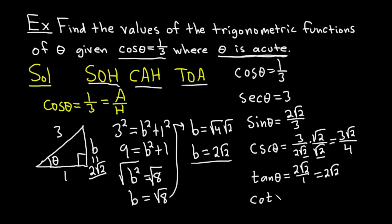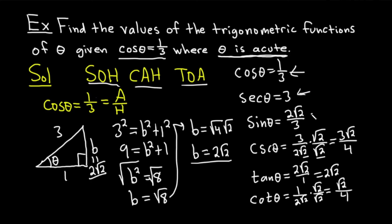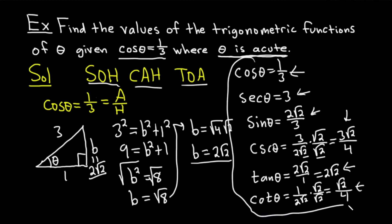And last but not least, cotangent of theta is the reciprocal of tangent: 1 over 2 root 2. Rationalizing gives root 2 over 4. So here are our final answers: cosine equals one third, secant equals 3, sine equals 2 root 2 over 3, cosecant equals 3 root 2 over 4, tangent equals 2 root 2, and cotangent equals root 2 over 4. Hopefully this video has been helpful and you've learned some math. If you enjoyed it, make sure to check out more videos on Chegg. Until next time, good luck.